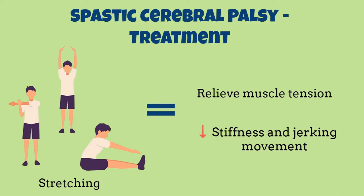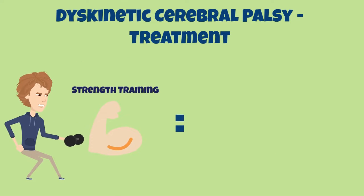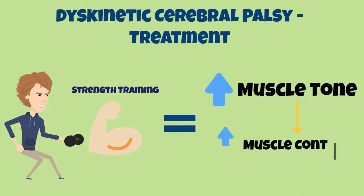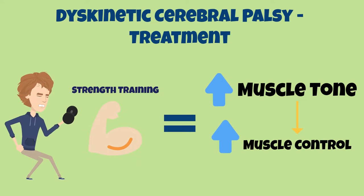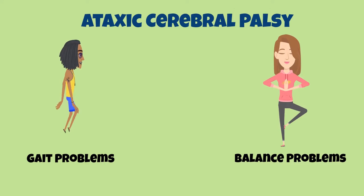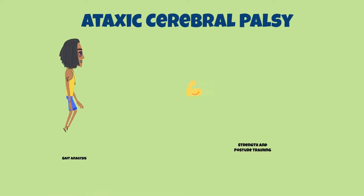Meanwhile, for dyskinetic cerebral palsy, physiotherapy will utilize a strength training and focused approach, which aims to restore some of the lost controlled muscle movement through increasing muscle tone. Lastly, physiotherapy for ataxic cerebral palsy aims to improve gait and balance problems faced by patients through a combination of different techniques such as gait analysis, strength, and posture training.